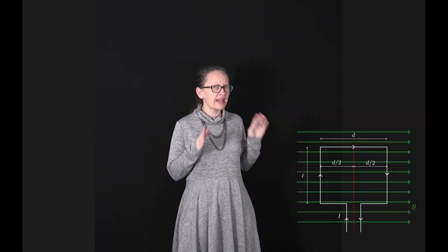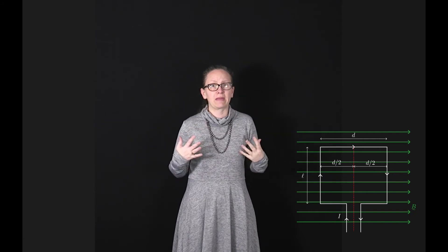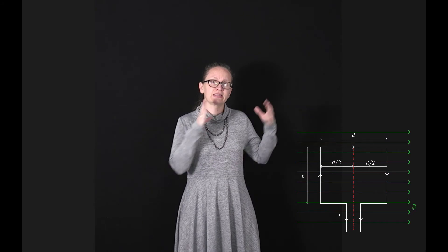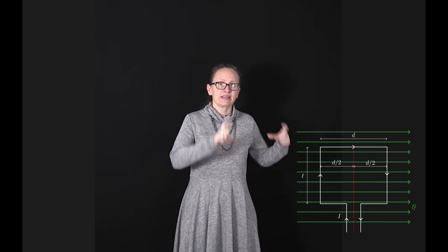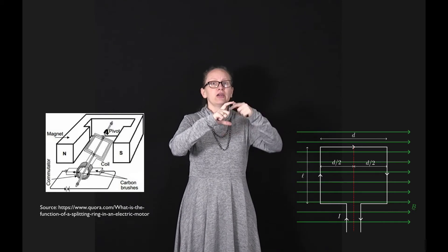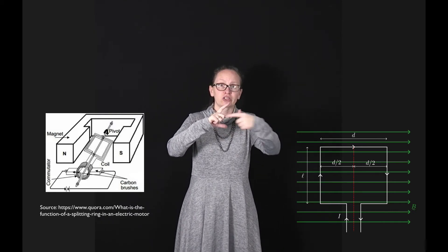In practice, there are many modifications we need to make to this simple motor to make it work better. One modification is that if we're using DC current, we need to have a split ring commutator joining the power supply to the wires.